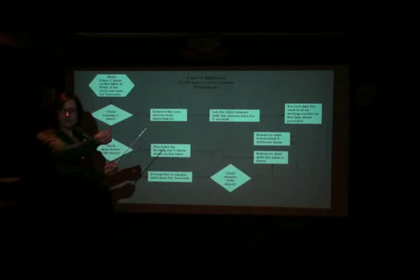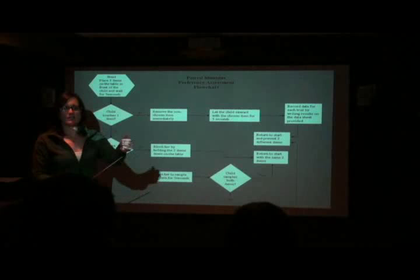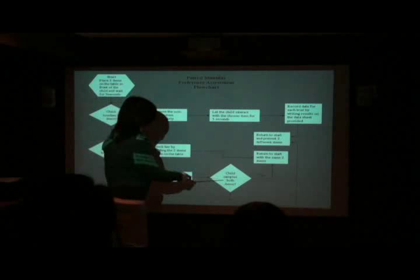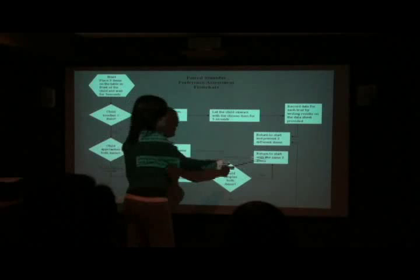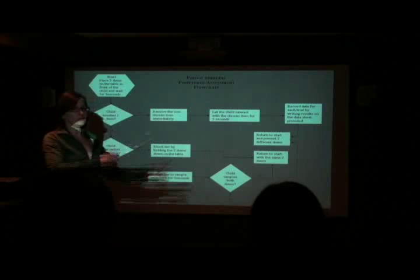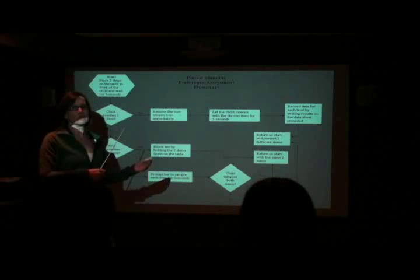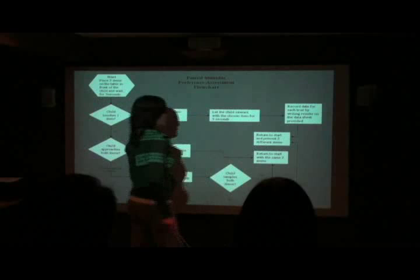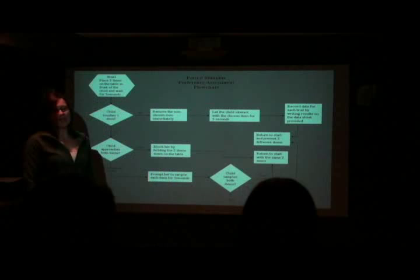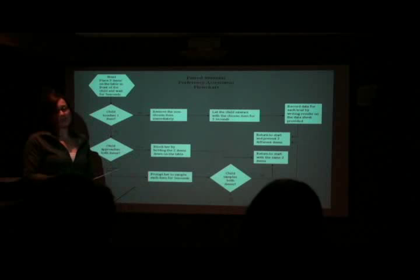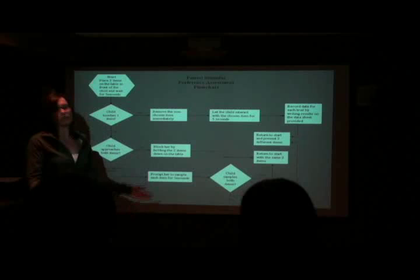The third way the child could approach the items is by doing nothing and sitting there. At this point you want to prompt her to sample each item — if it's a food item, you would hold it up close to their face so they can see it; if it is a toy, you would give it to them and allow them to touch it for five seconds. If the child samples both the items, you're going to return to the start with the same two items and try it over again. If she doesn't sample both of them, then you're going to return to the start and present two different items, because clearly she is not interested in those two items at all. You might find out at the end that truly she does not like those two items whatsoever, no matter what you mix them with.